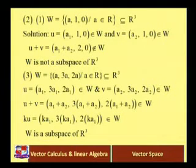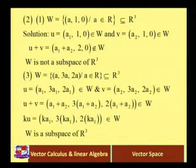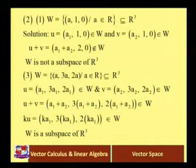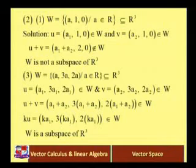R belongs to W such that the first coordinate is A, the second coordinate is 3 times the first coordinate, and the third coordinate is 2 times the first coordinate — so (A, 3A, 2A). U plus V equals (A1+A2, 3(A1+A2), 2(A1+A2)), which also belongs to W. K into U equals (KA1, 3KA1, 2KA1), which also belongs to W. Both conditions are proved, so W is a subspace of R³.